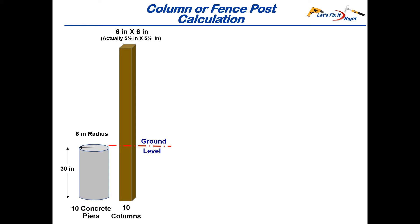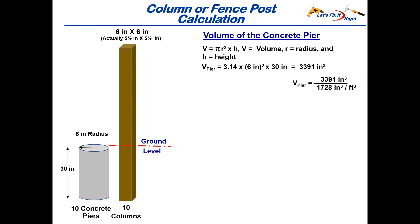In this case, we are using the standard volume formula for a cylinder, which is pi r squared times height. Our pier volume is 3.14, or pi, times 6 inches squared times a height of 30 inches, which provides 3,391 cubic inches. Dividing this by 1728 cubic inches per cubic foot gives us 1.9 cubic feet for each pier.